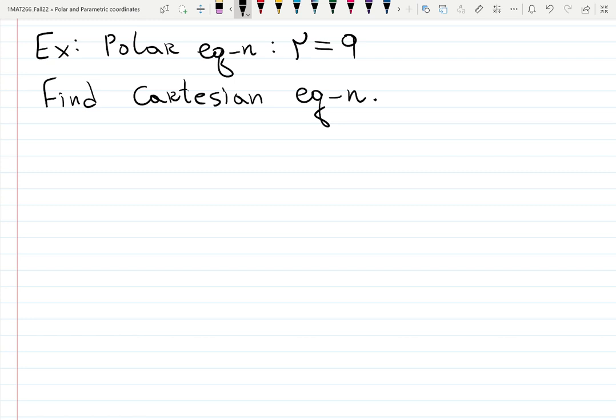So R equals 9. It's a distance away from the pole. It's always 9. Let's see what it means. Check it out.